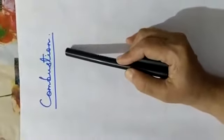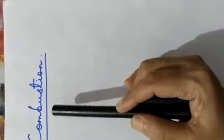Welcome back children. In this session we will study about the different types of combustion. But before proceeding we will recapitulate the terms studied in our previous class. First of all, we studied about what is combustion — it is simply a chemical process in which a substance burns in air or oxygen with the release of heat and light.